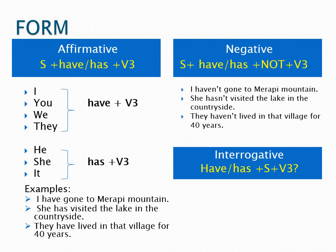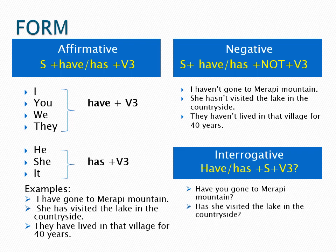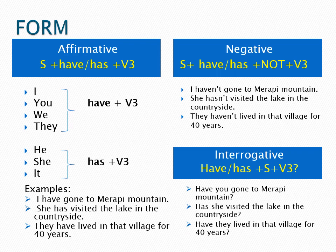The third form is interrogative: have or has plus subject plus verb three, followed by a question mark. Examples: Have you gone to Merapi mountain? Has she visited the lake in the countryside? Have they lived in that village for 40 years?